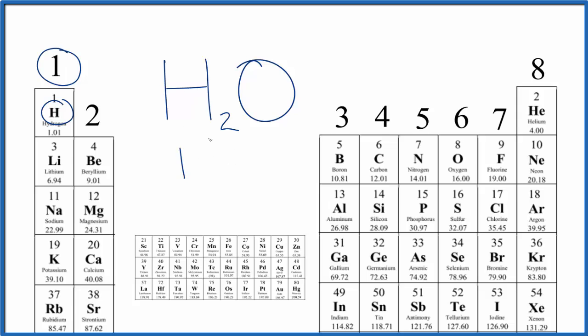For hydrogen, we have one, and we have two hydrogen atoms, so we'll multiply that by two. Oxygen group 16, sometimes called 6A, here's oxygen, it has six valence electrons.